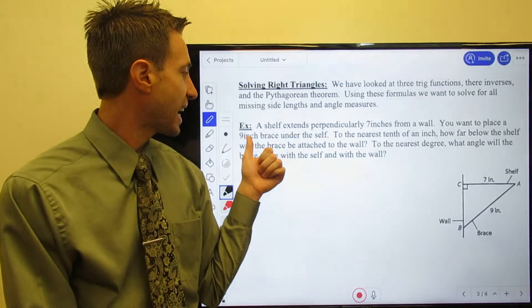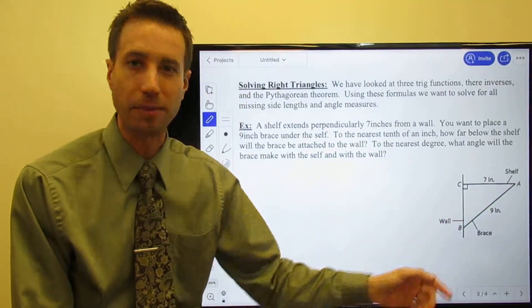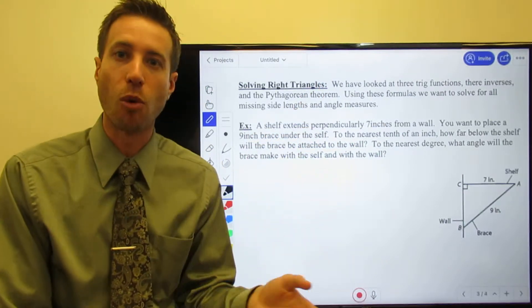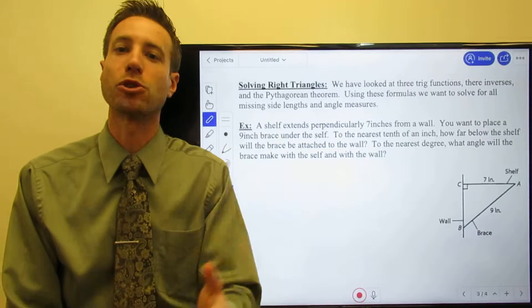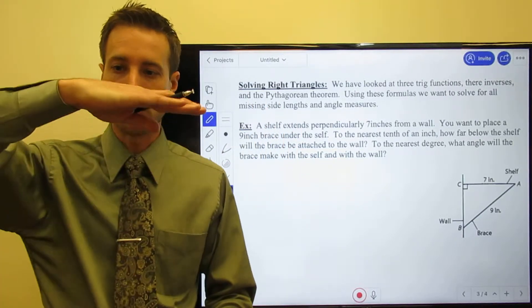You want to place a nine-inch brace under the shelf. I'll show you - there's my brace. I'm gonna set something really heavy on the shelf; I don't want it to just fall off the wall, so I put a brace holding that shelf up.